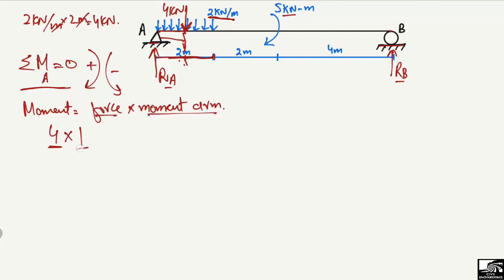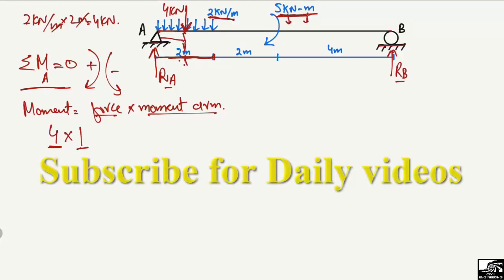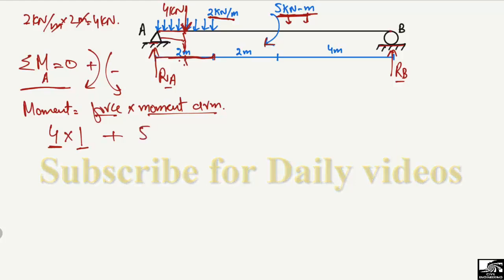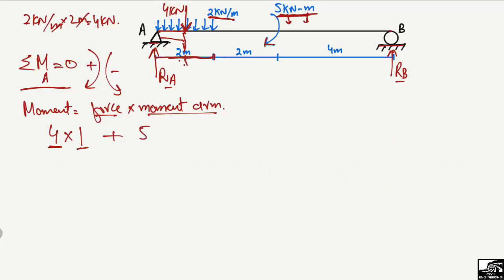The second force creating a moment about point A is the 5 kilonewton-meter external moment. The units — kilonewtons times meters — confirm it is an external moment rather than a force. It acts in the clockwise direction, so it is taken as positive: +5 kN·m.